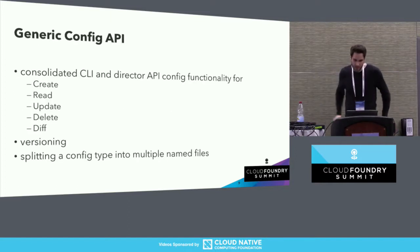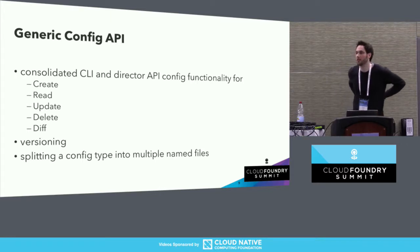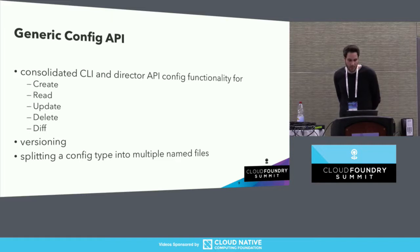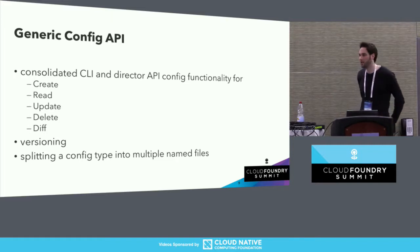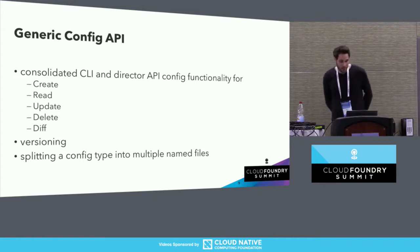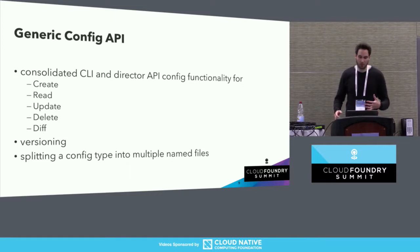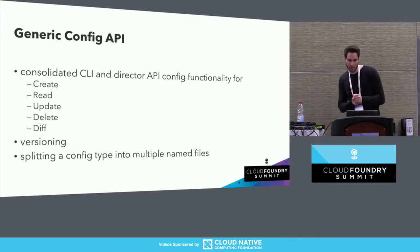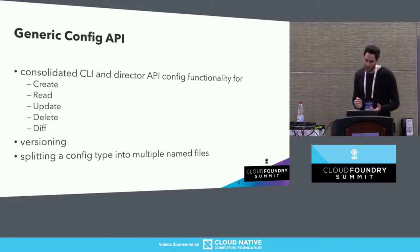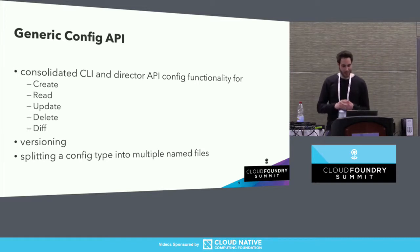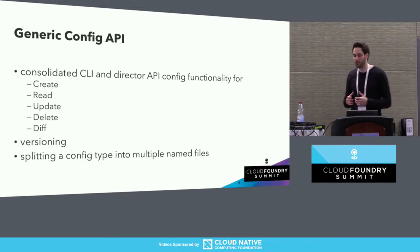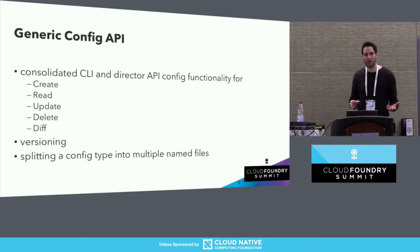So the BOSH and OpenStack CPI team at SAP and Sousa developed generic configs. Given that the functionality of creating, updating, deleting, and diffing across config types is very similar, the director now provides consolidated CLI and API functionality. Users are able to do versioning — seeing how config types evolved over time — they can diff configs, and a single config type can now be given multiple names. One use case of named configs is that different teams can maintain their own configuration files.